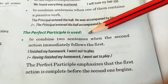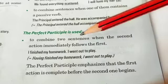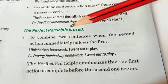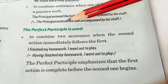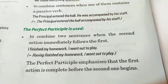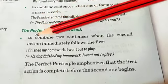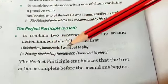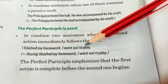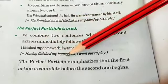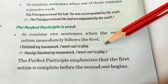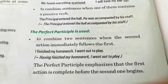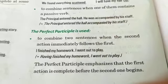The perfect participle is used to join two sentences when one action is completed and the second action follows immediately after. For example: 'I finished my homework. I went out to play' becomes 'Having finished my homework, I went out to play.' This was about the participles — I hope you have understood the topic. Thank you so much.